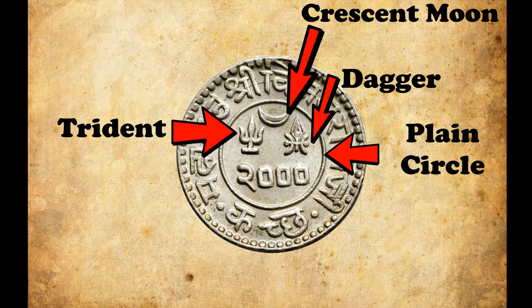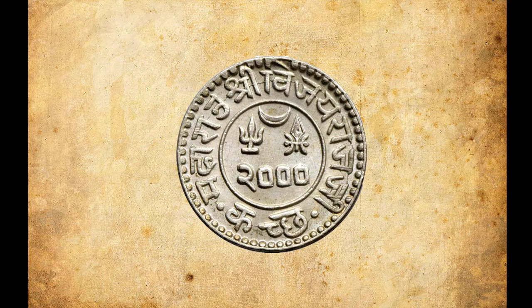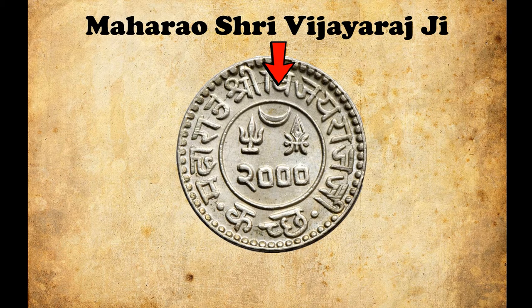The coin shown here is minted in the Vikram Samvat year of 2000, which is equivalent to the period between March 1943 to February 1944 as per the Christian calendar. Outside of this, in circular form, 'Maharal Shri Vijayaraj G.' is written on the top portion and 'Kutch' is written on the bottom portion, in Devanagari legend, separated by dots.